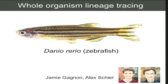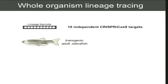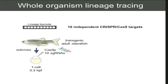We did some cell culture work prior to this, but I'll skip to the animal experiment where we tried to take what we thought was a working system in cell culture and put it into a fish. For this we teamed up with Alex Schier's group and in particular a terrific postdoc, Jimmy Gagnon, who led a lot of the fish work. We have this barcode that we put into adult zebrafish as a transgenic, and then we inject all of the editing reagents including guides corresponding to each of the ten targets and Cas9 into single-cell embryos.